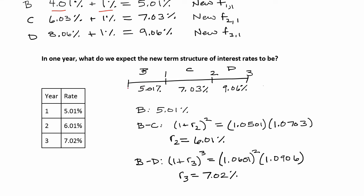The next part is finding the new term structure of interest rates so we can reprice the bond under the new inflation expectations. I've drawn a new timeline for periods B, C, and D — this is one year in the future. Under expectations theory, the forward rates for that first year become our new spot rates. So over period B, a one-year bond should have an interest rate of 5.01 percent — this is if expectations theory holds exactly.